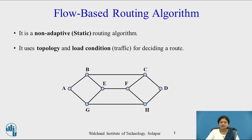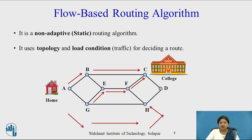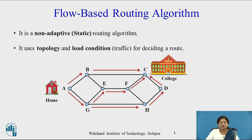Let me explain with this subnet. In this subnet there are total 8 routers: A, B, C, D, E, F, G, and H, and all these routers are connected with communication links. Suppose this is your home — the source is your home, that is A, and you want to reach your college, that is destination C. So there are many paths from A to C: one path is A to B to C, another path is A to G to E to F to C, and likewise there are some more paths from source A to destination C.